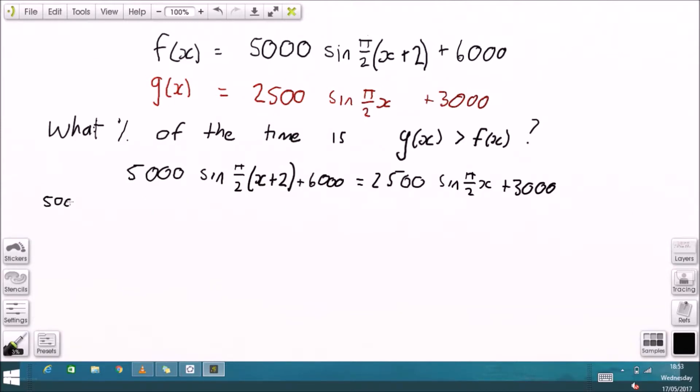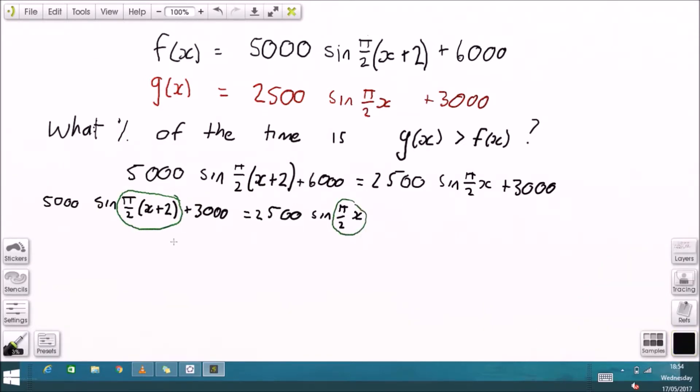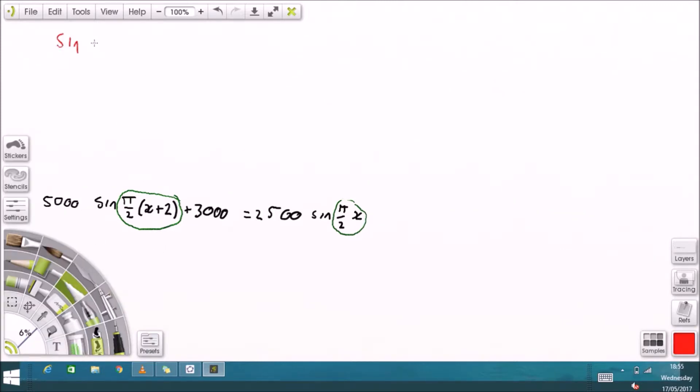I'll just start by subtracting 3000 from both sides. Okay, now these two angles inside the sines are not equal so I can't just subtract them from each other.